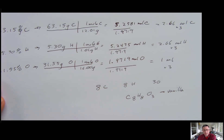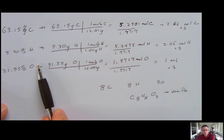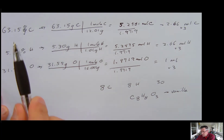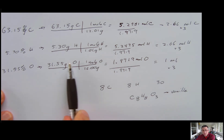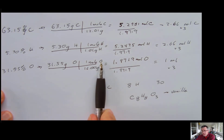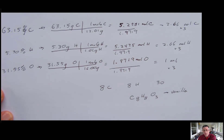This is the idea behind empirical formulas and going from combustion analysis data through our steps: converting percentages to grams, grams to moles, and then getting to a whole number ratio. Sometimes we have to go an extra step and multiply everything by 2 or 3 — in this case, 3 worked. Hopefully that's helpful, and we'll talk to you soon. Bye.